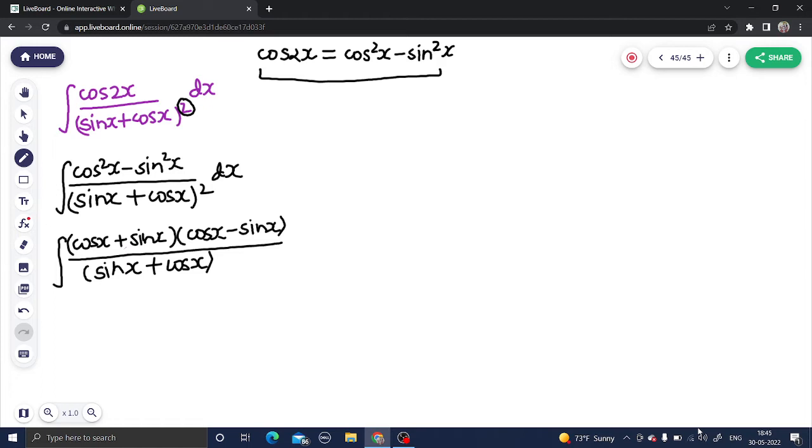Now I will carefully write the next term, so cos square is there of course. So one power I can cancel out. Okay.